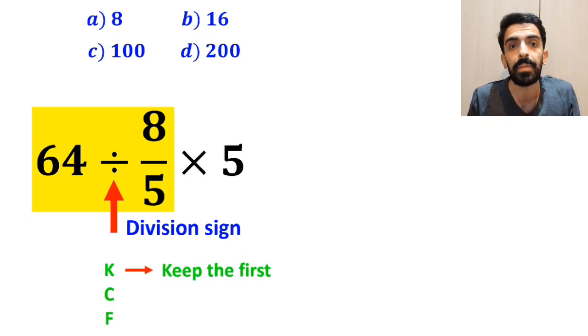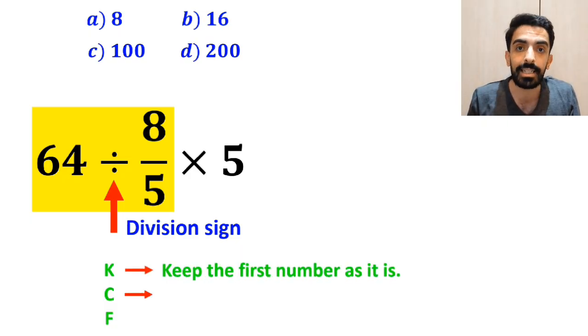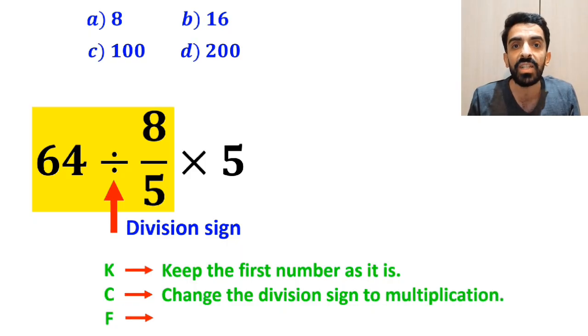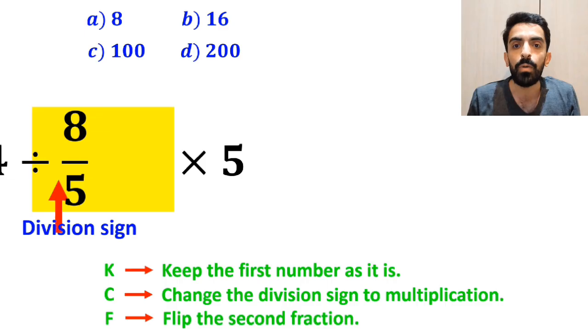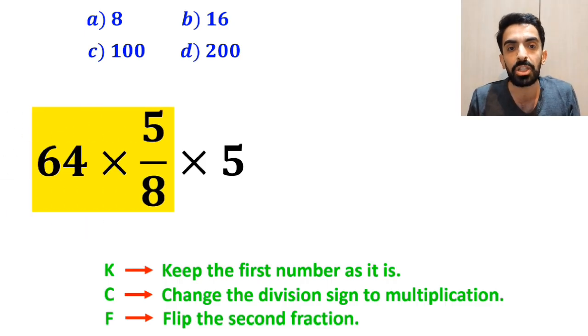C stands for change the division sign to multiplication, and F stands for flip the second fraction. So, we remove the highlighted part and write this expression as 64 times 5 over 8 multiplied by 5.